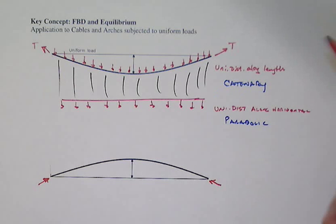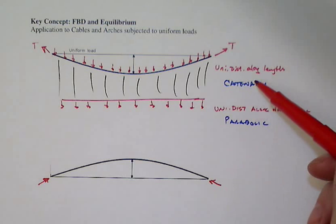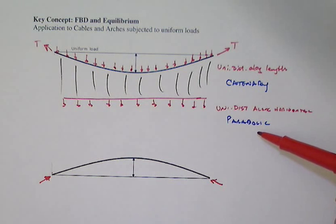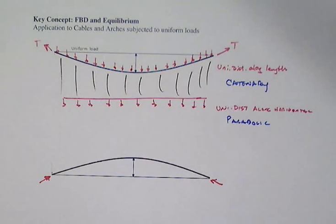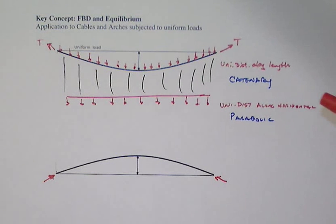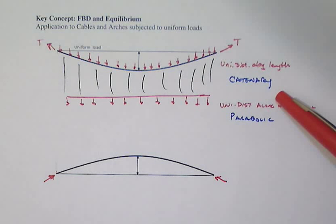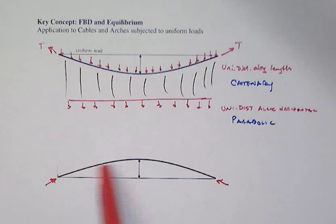If instead we make a parabolic arch but apply only self-weight, it wants to take a catenary shape — but we've forced it into a parabolic shape by freezing it. That's problematic, because we won't have pure compressive forces; we'll end up with some bending moment along the length. So understanding these shapes is important not only for choosing the right equations, but we must choose ones consistent with the actual shape and whether we're in a tensile or compressive situation.